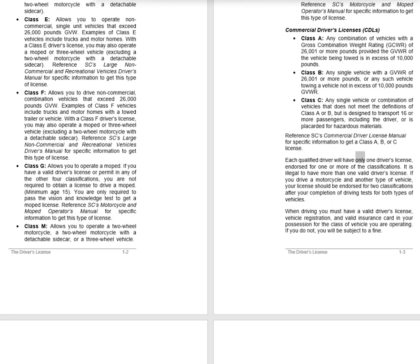Each qualified driver will have only one driver's license, endorsed for one or more of the classifications. It is illegal to have more than one valid driver's license. If you drive a motorcycle and another type of vehicle, your license should be endorsed for two classifications after your completion of driving tests for both types of vehicles. When driving, you must have a valid driver's license, vehicle registration, and valid insurance card in your possession for the class of vehicle you are operating. If you do not, you will be subject to a fine.